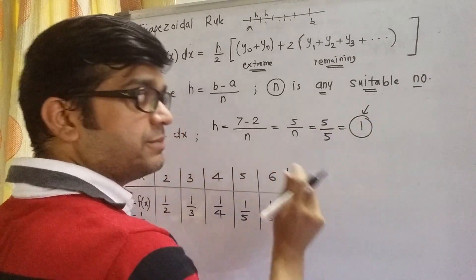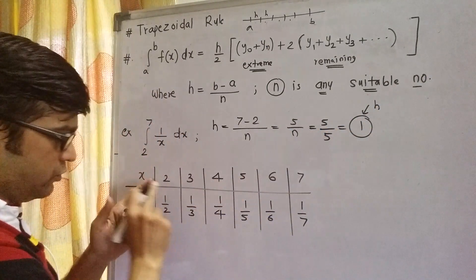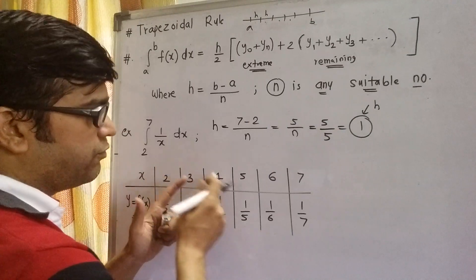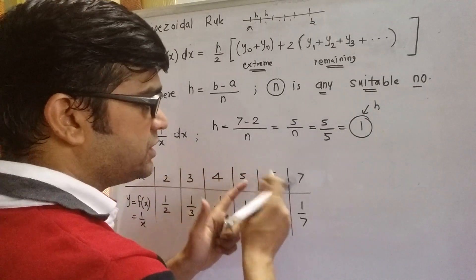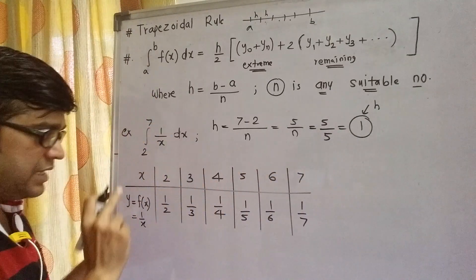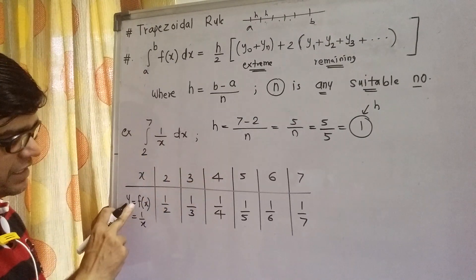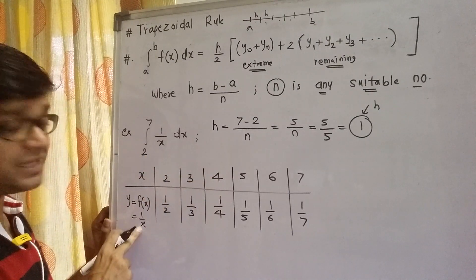So five small sub-intervals, each having width h. So 2 to 3 and 3 to 4 and 4 to 5, 5 to 6, and 6 to 7. Now corresponding to each value of x, we calculate f(x), which in this case is 1 by x.